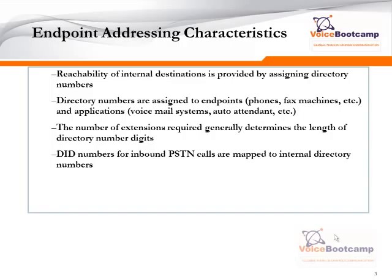Directory numbers are assigned to endpoints such as phones, fax machines, voicemail ports, auto-attendant numbers, contact center ports, and so on. The number of extensions required generally determines the length of the directory number. For example, if you select a two-digit extension, the maximum number you will have is from 00 to 99, limiting you to maybe 100 or 200. Whereas if you want more, you need four-digit or five-digit — the longer the length, the more numbers you will have.